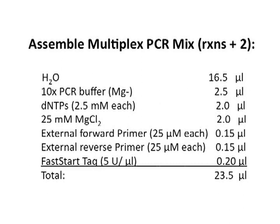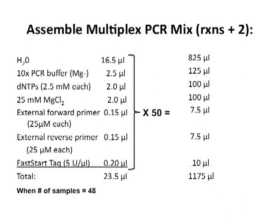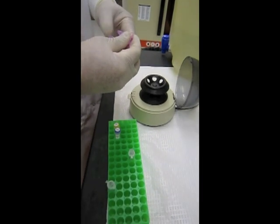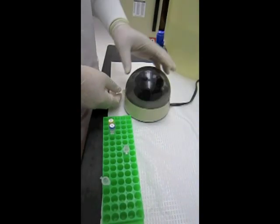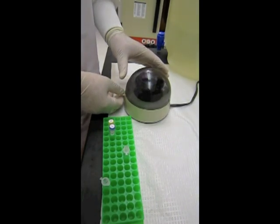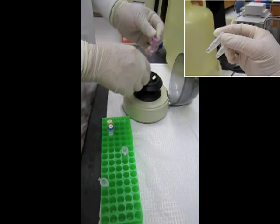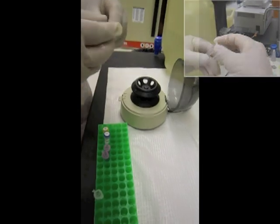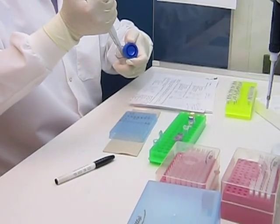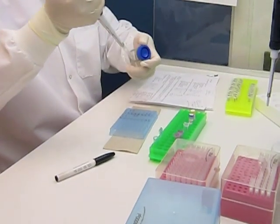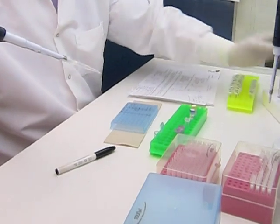Now it is time to assemble the multiplex PCR mixture. This list shows the amount of each reagent needed for one reaction or one well. It is good practice to prepare enough mixture for at least two extra reactions — so if you are running 48 samples, prepare enough for 50. When all reagents are thawed, mix each tube well and spin down briefly in a centrifuge to draw the liquid to the bottom and prevent contamination from splattering. Make sure to balance the centrifuge with tubes containing equal volumes of liquid. Add the proper amount of each reagent to a tube labeled multiplex PCR mix, adding the fast start DNA polymerase last.